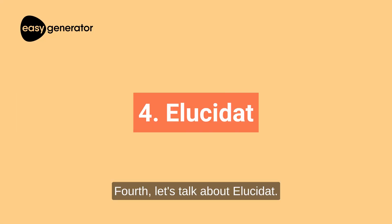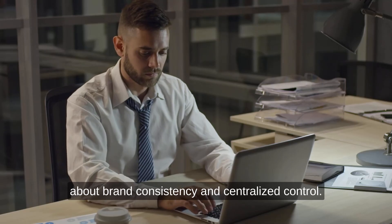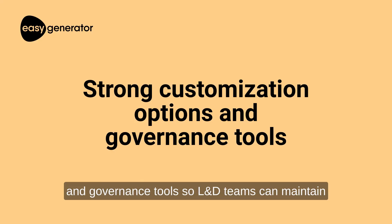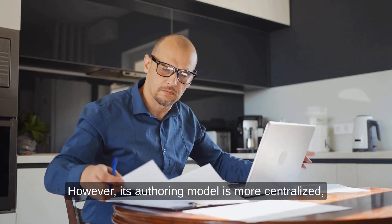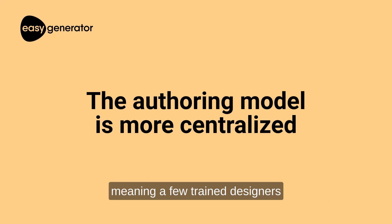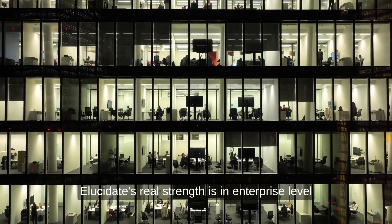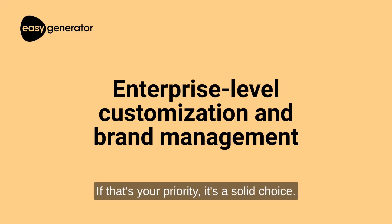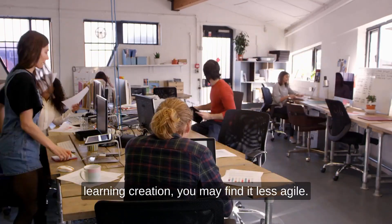Fourth, let's talk about Elucidate. Elucidate is great for organizations that care deeply about brand consistency and centralized control. It offers strong customization options and governance tools, so L&D teams can maintain brand standards across all courses. However, its authoring model is more centralized, meaning a few trained designers manage most of the content creation. That can slow down updates and make scaling tricky if demand for learning is high. Elucidate's real strength is in enterprise-level customization and brand management. But if you're looking for faster, decentralized learning creation, you may find it less agile.